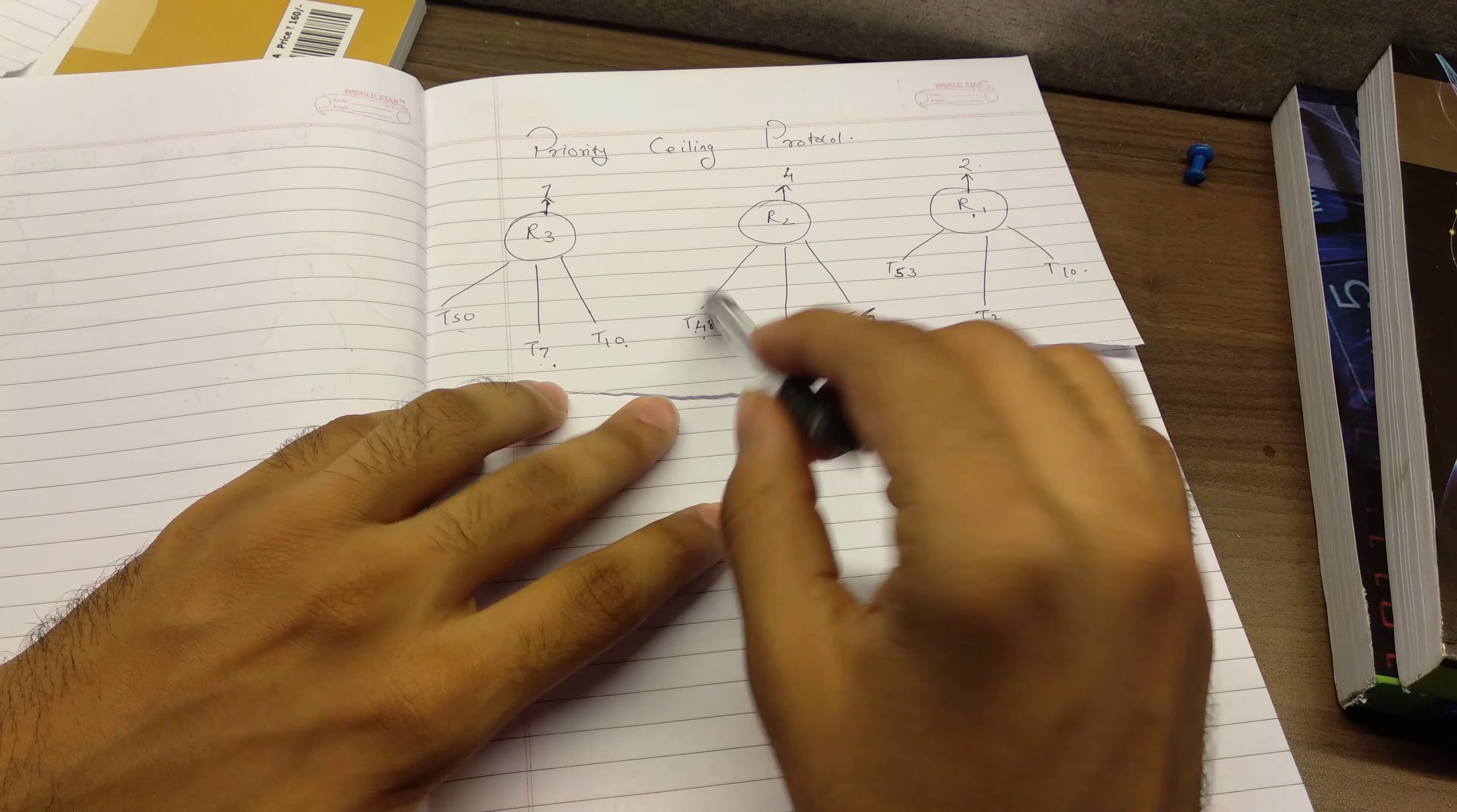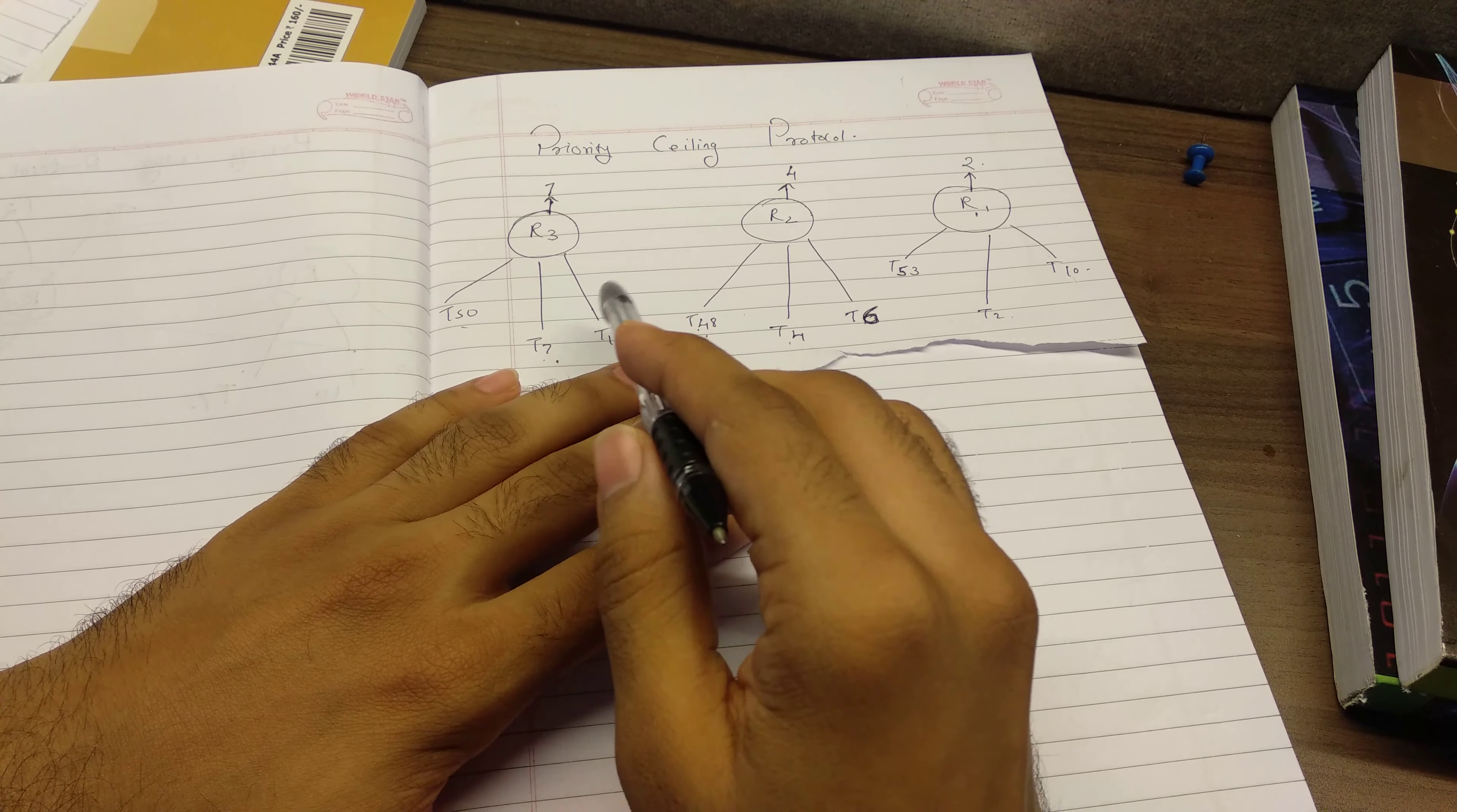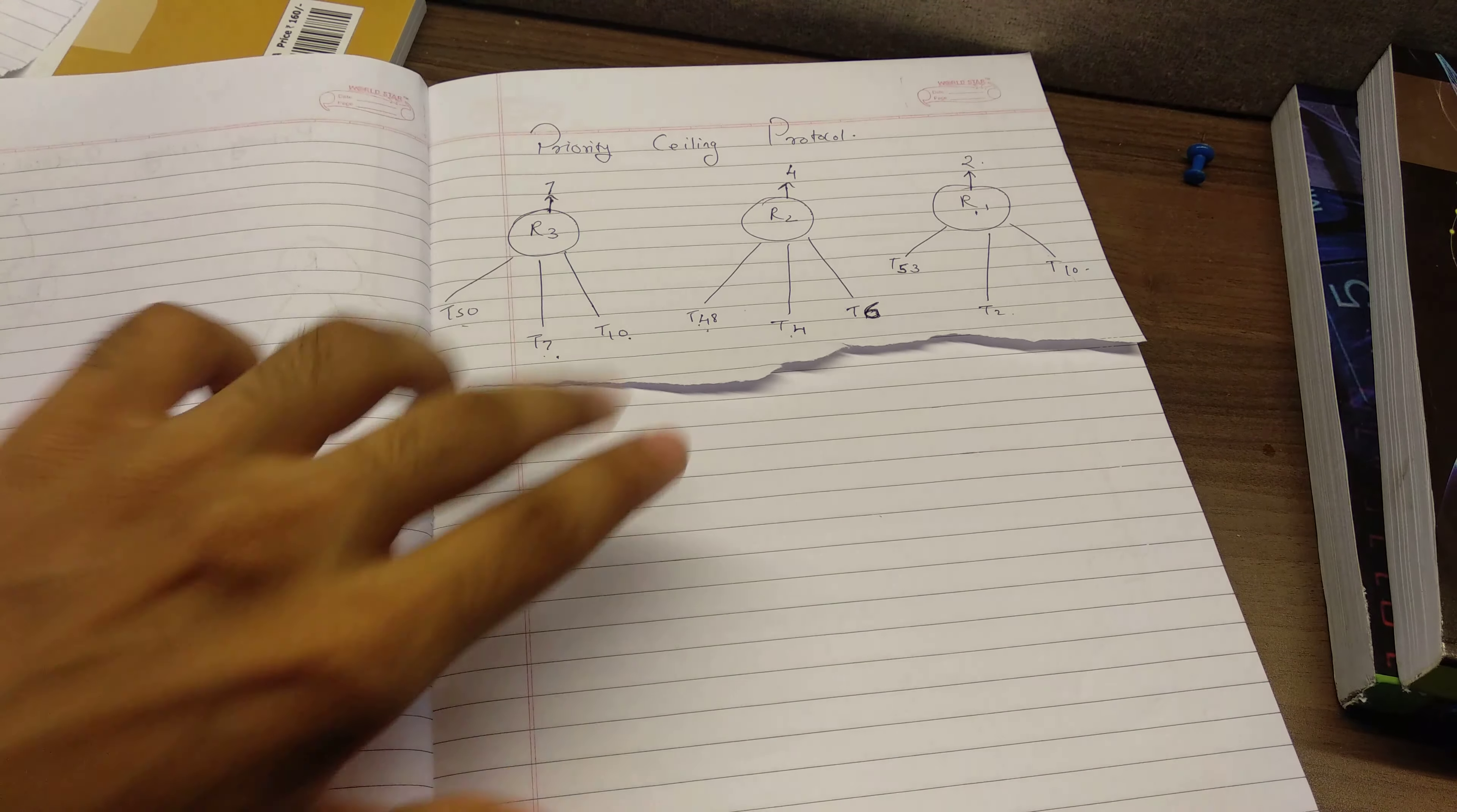One thing you need to understand about priority ceiling protocol is in the OS, when the resources are allocated at the starting itself, it is declared which tasks would be using which resources. So it's already known that, for example, here T50, T7, T10 would be using R3, T40, T4 and T6 would be using R2 and somewhere in their task lifetime, they might use that resource.